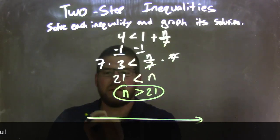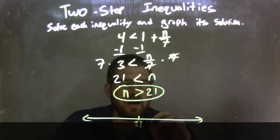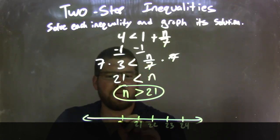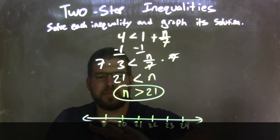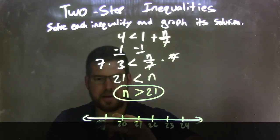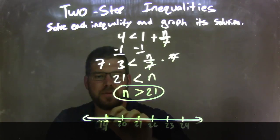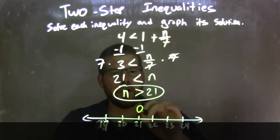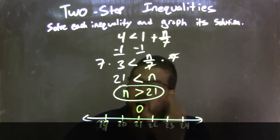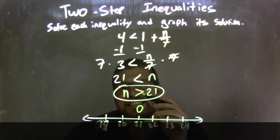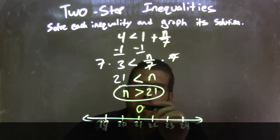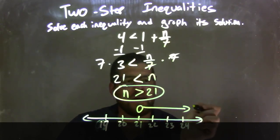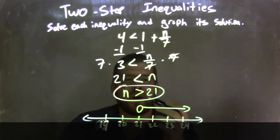Now we need to graph it. Let's put 21 on the number line and go by 1s: 22, 23, 24, and 20, 19. Since n is greater than 21 — not equal to, just greater than — we have an open circle, not a closed circle. Open circle, and then we shade to the right because n is greater than 21. Our graph now matches our final answer of n is greater than 21.